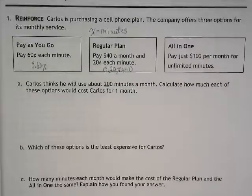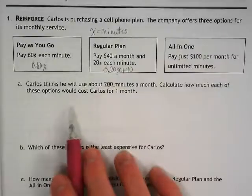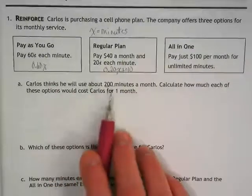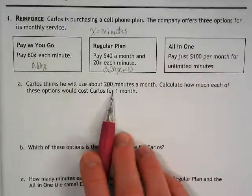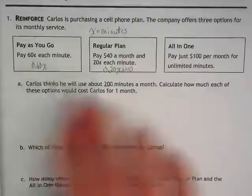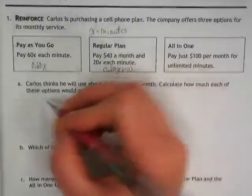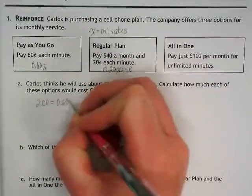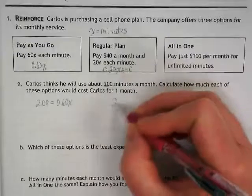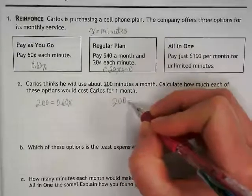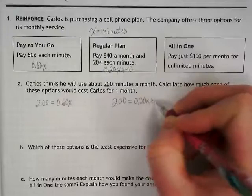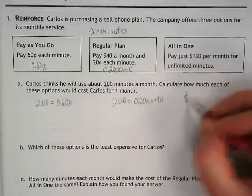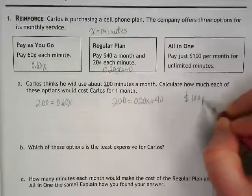We don't even really need to write an expression for that last one. Since he's going to spend 200 minutes a month, we can use 200 as the value and turn our expressions into equations. So 200 minutes at 60 cents per minute for the first, 200 minutes at 20 cents per minute plus $40 for the second, and the last plan is just $100 a month no matter how many minutes he uses.